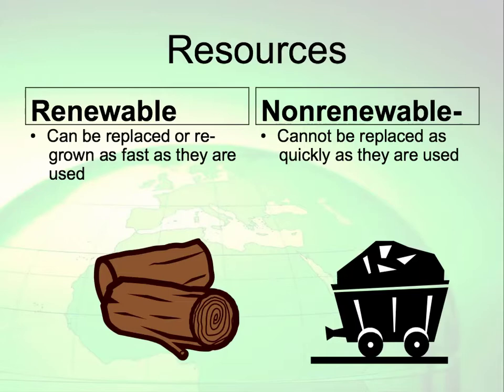A renewable resource is one that can be replaced or regrown as fast as it is used. A non-renewable resource cannot be replaced as quickly as it is used up. For example, bamboo is a renewable resource — it grows really fast and can be replaced as fast as it is used. However, coal takes a long time to develop, so it cannot be replaced as quickly as it is used up.